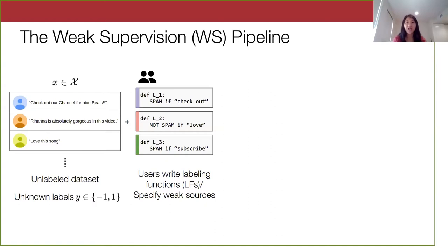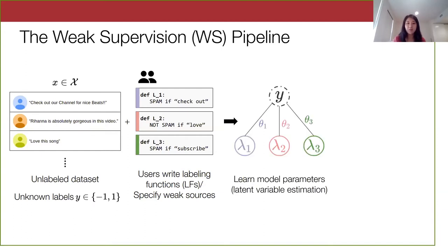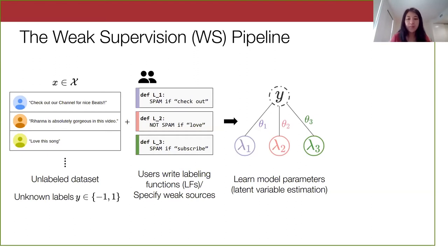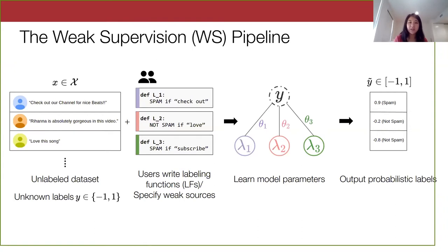For instance, if a comment has 'checkout', there's a good chance it's spam. You can think of labeling functions as votes on the true label of a given point. With just these labeling functions, we learn a model over them and the true latent label — broadly known as latent variable estimation. We construct a graph depicting the relationship between the labeling functions and true labels, and we learn theta parameters, which are scalar weight parameters corresponding to how accurate a labeling function is and how much you want to value its vote.